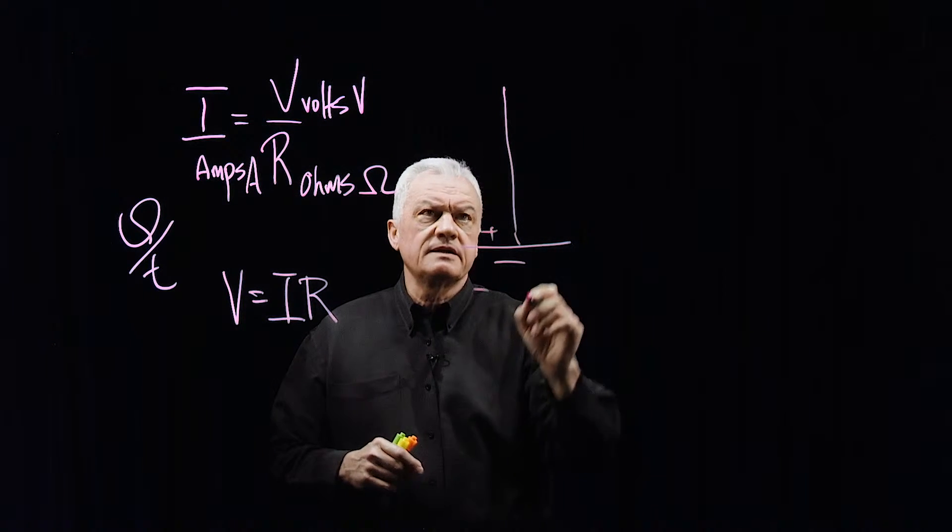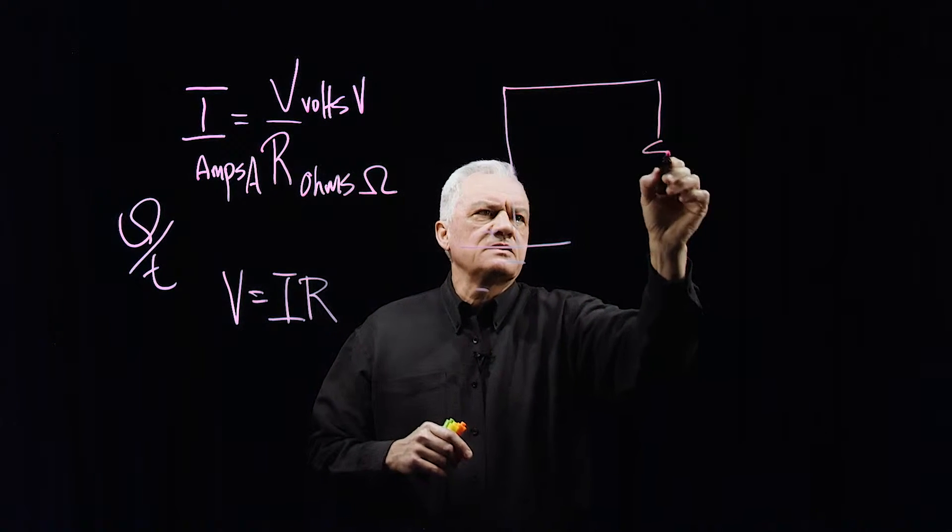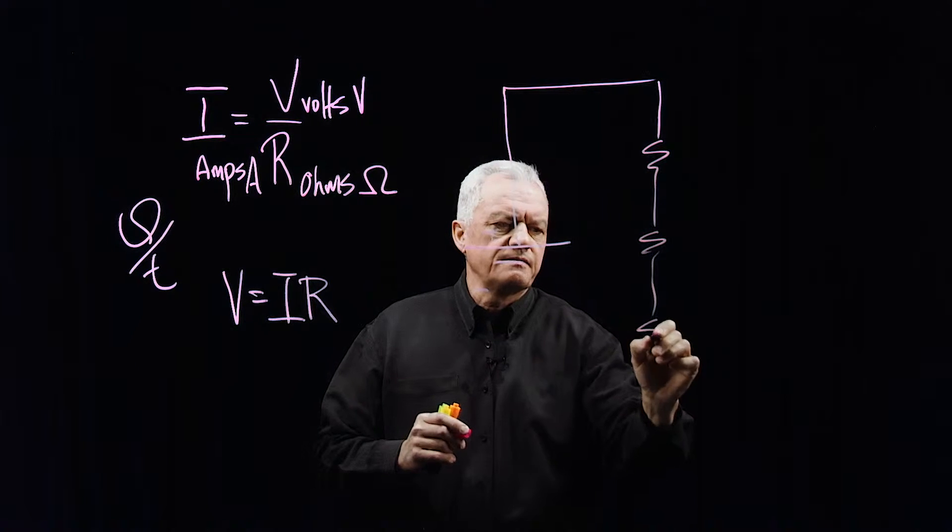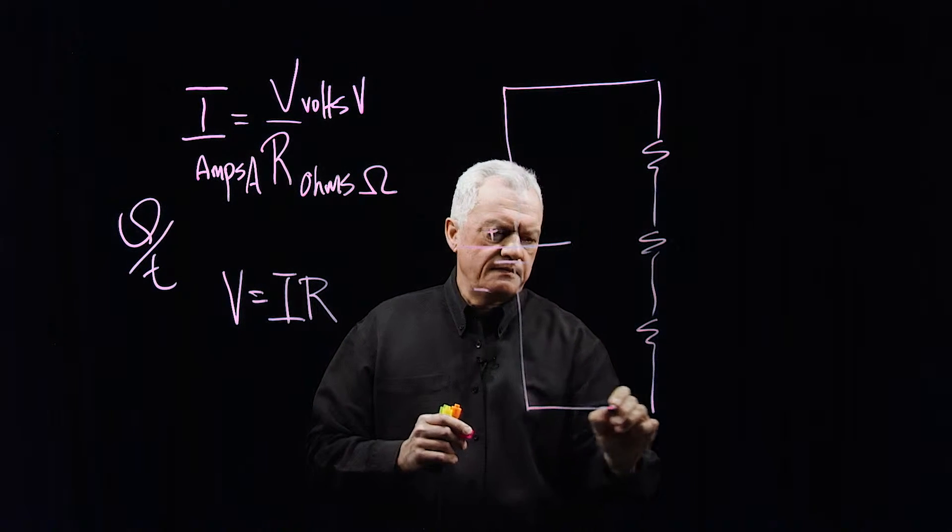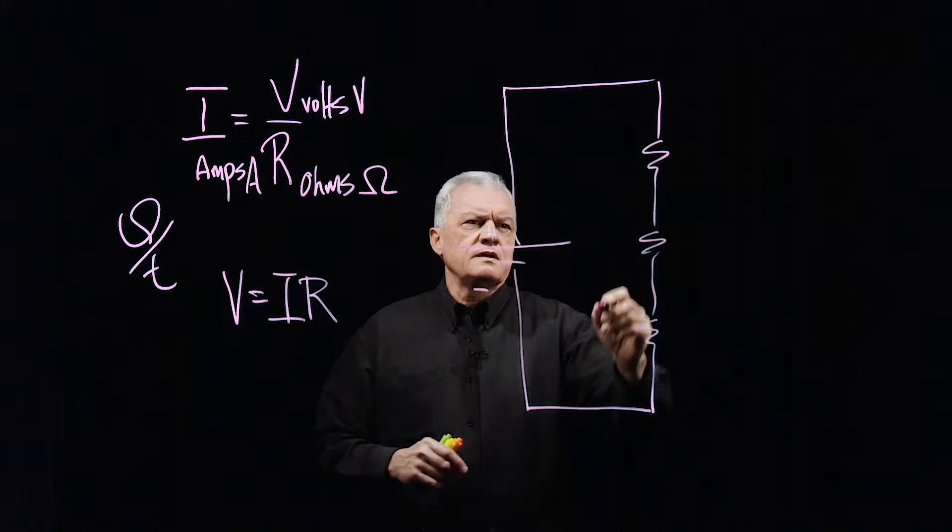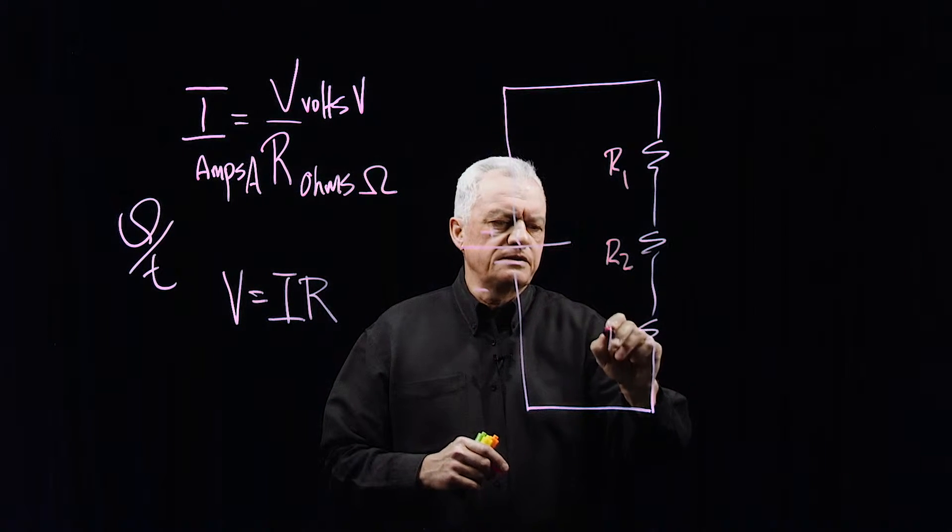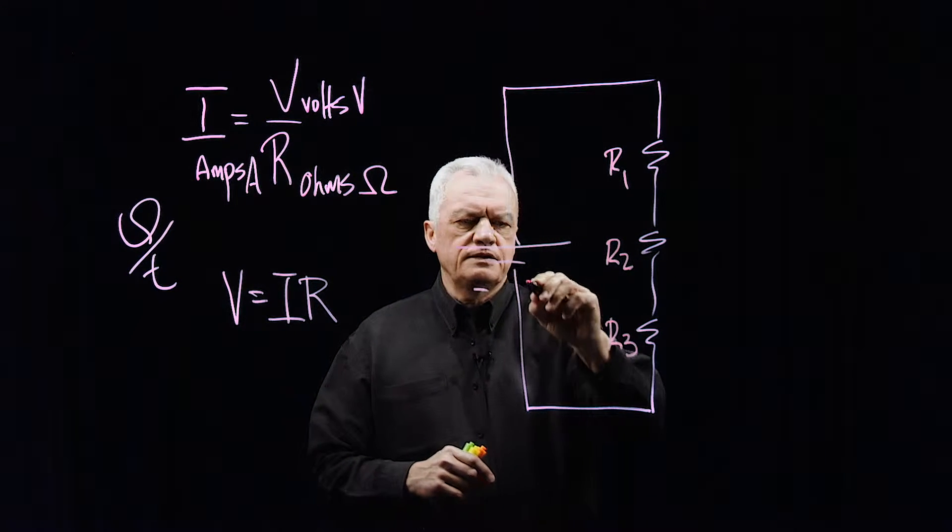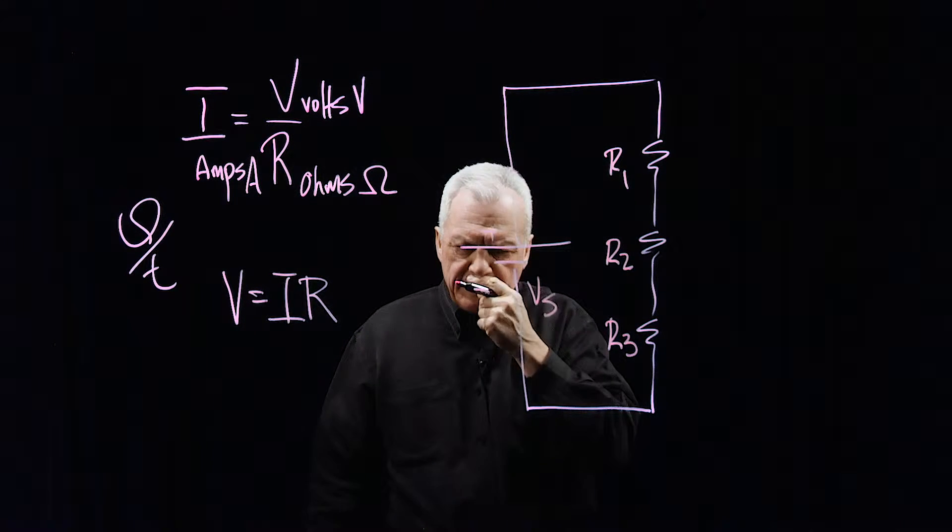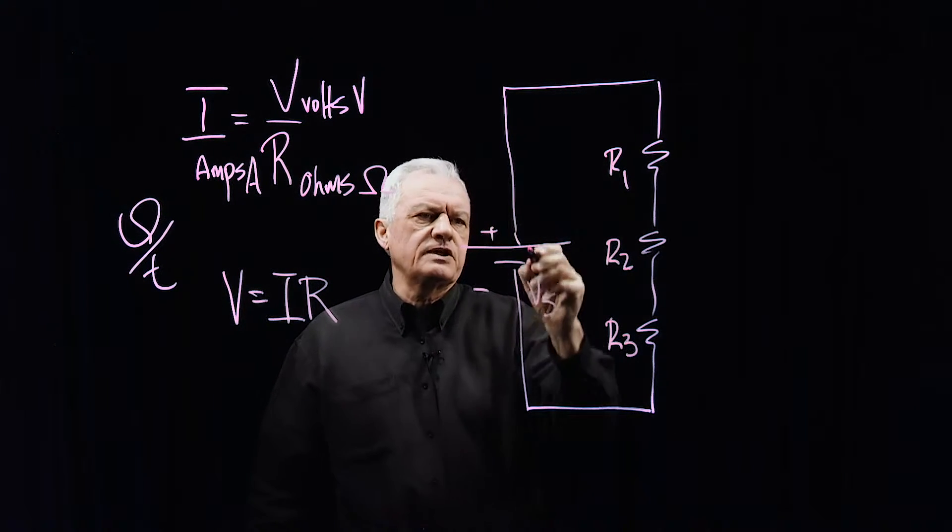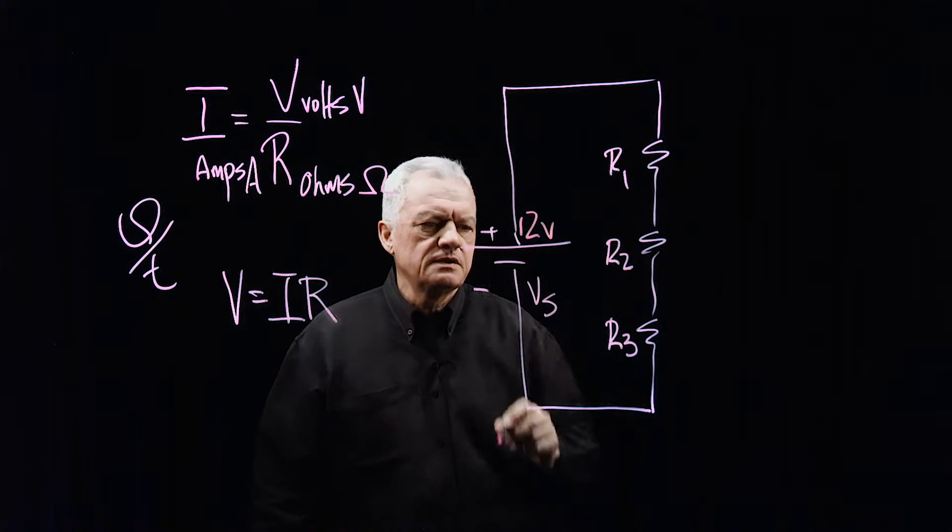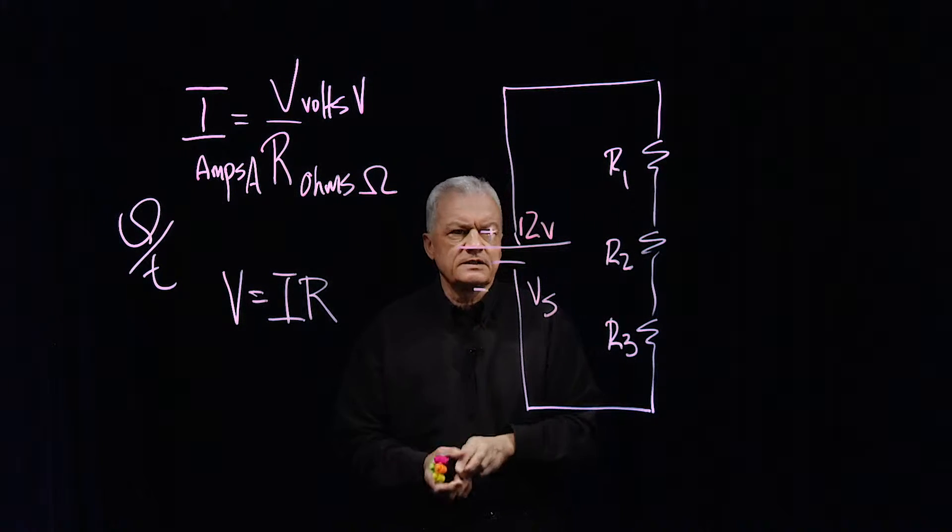This is a battery, plus and minus terminals, and let's look at a three resistor circuit. We call this resistor one, resistor two, and resistor three, and this is our source voltage. Let's pick a voltage, let's try 12 volts for example. We're going to use 12 volts as the source.